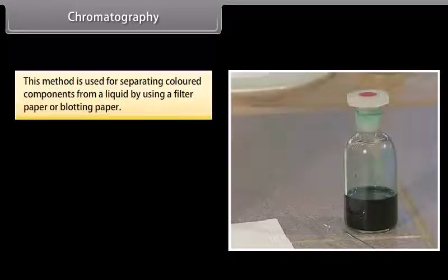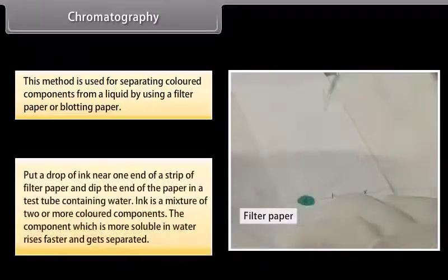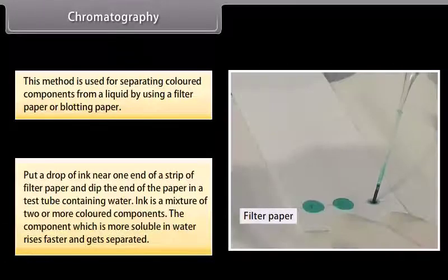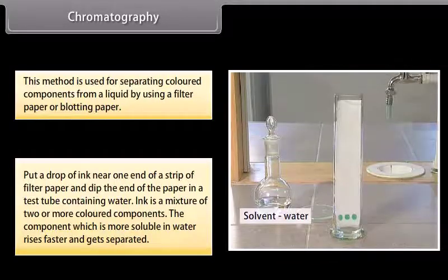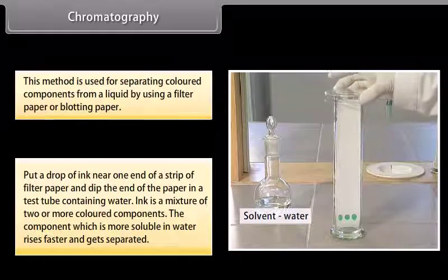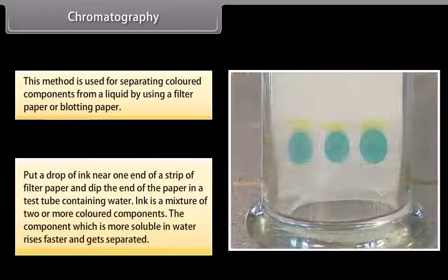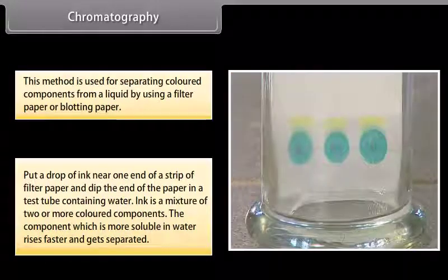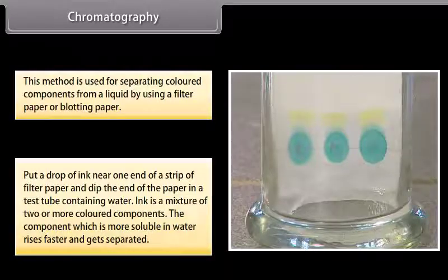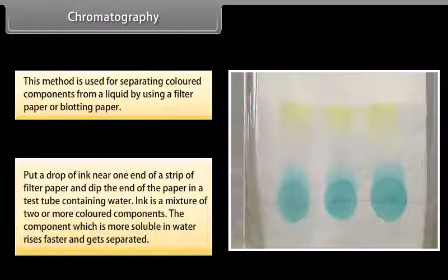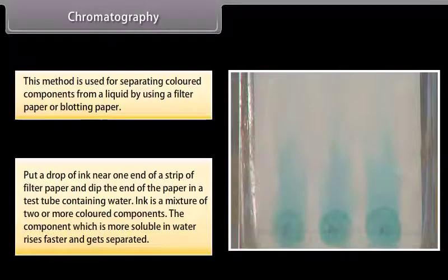Chromatography. This method is used for separating colored components from a liquid by using filter paper or blotting paper. Put a drop of ink near one end of a strip of filter paper and dip the end of the paper in a test tube containing water. Ink is a mixture of two or more colored components. The component which is more soluble in water rises faster and gets separated.